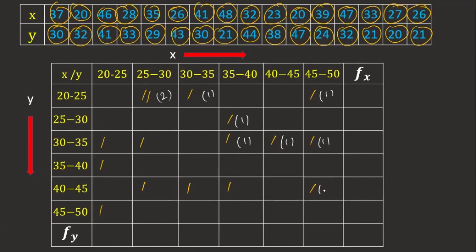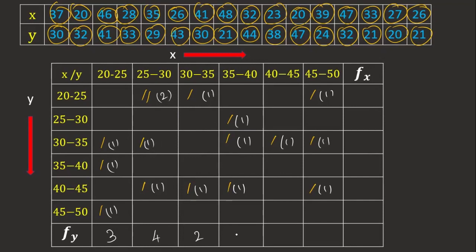The totals should add up correctly — here the total is 16 both horizontally and vertically. Counting across: 3, 3, 4, 2, 3, 1 — totaling 16 vertically. Counting across the columns: 4, 1, 5, 1, 4, 1 — which totals 16. The values match correctly both horizontally and vertically.